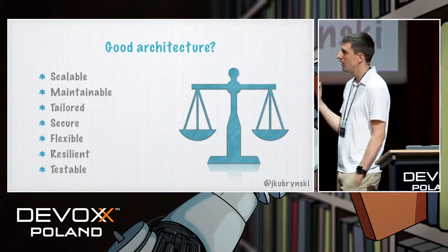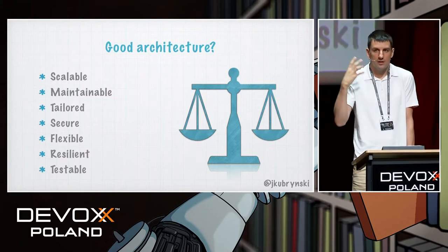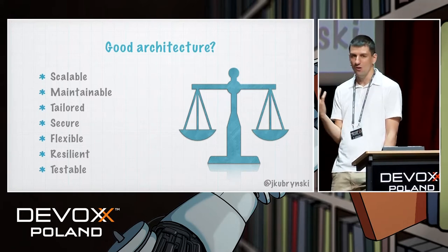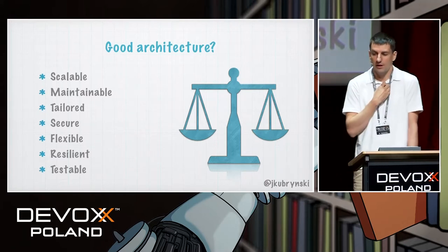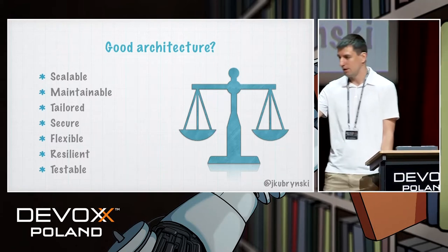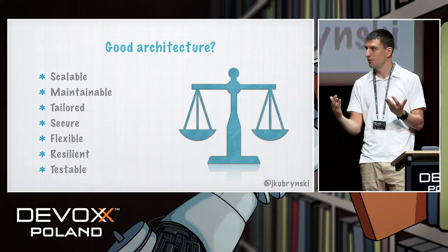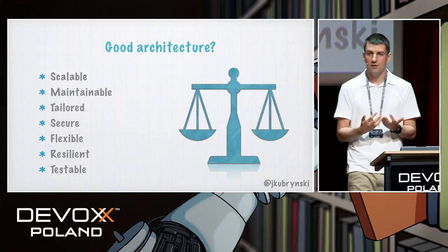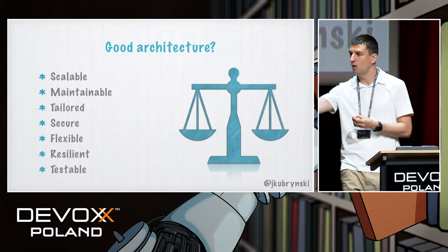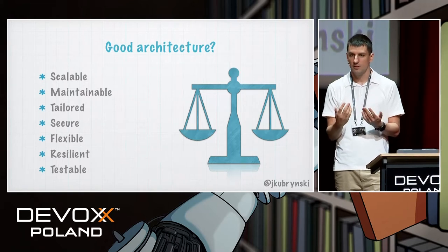The problem is when I ask: what do you mean by testable architecture? What are the principles? No one actually knows. I want my architecture to be flexible — but what does that mean? How can you say this architecture is flexible and this one is not? Is there any scale of flexibility, any scale of resilience? If there is no scale, there are no numbers, and it's just a rough guess.